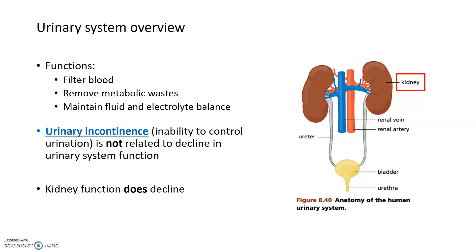To talk about age-related changes that happen to the urinary system, we first have to go over a few of the functions and basic processes occurring in the urinary system that might be affected by age. The urinary system is made up of three main parts: the kidney, where a lot of the magic happens; the bladder, which is a storage site for urine; and the tubes connecting the bladder to the kidneys — the ureters — and the urethra, which allows urine to be expelled. Overall, the urinary system functions to filter the blood, remove metabolic wastes, and maintain water and electrolyte balance in the body.